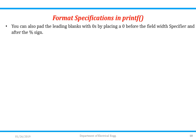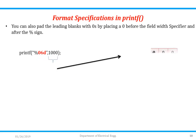You can also pad the leading blanks with zeros. For example, printf("%06d", 1000) — since field width is 6 and the number has 4 digits, it will be right-justified with the two leading blank spaces filled by zeros, resulting in 001000.